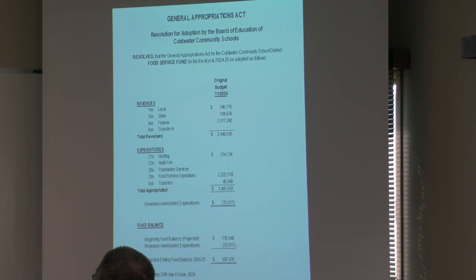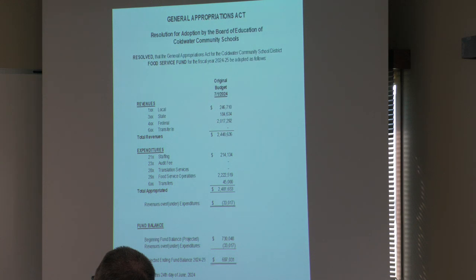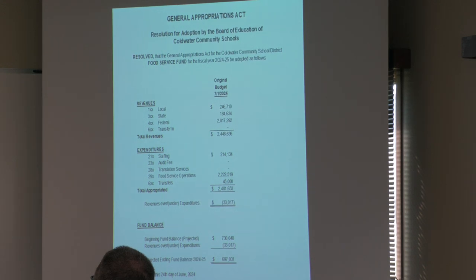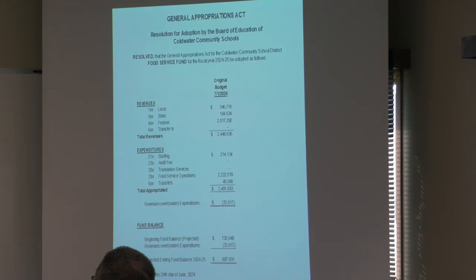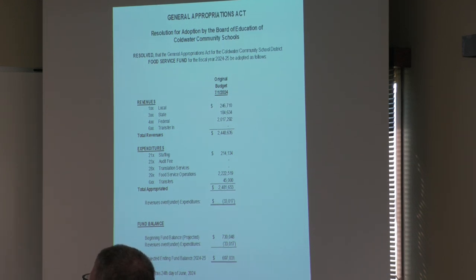The 24-25 food service fund is similar to this year — relying mainly on federal reimbursement, which is highly tied to student population and reimbursement rates. There will be some increases in staffing costs and food costs. We're showing a dip into fund equity of about $33,000, leaving an ending fund balance of $697,031. Based on general calculations, we don't expect to need a spend-down plan this year; three months of average operating expenditures is the maximum allowed in a food service fund equity, and we believe we're within that.